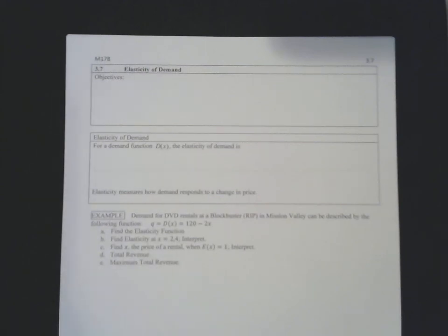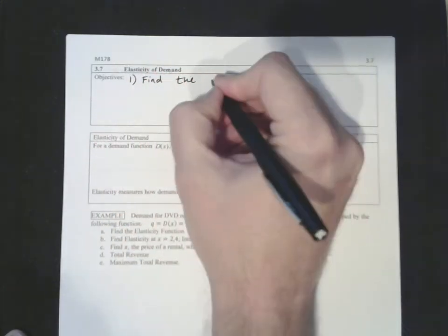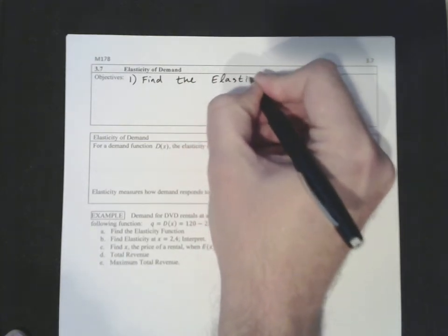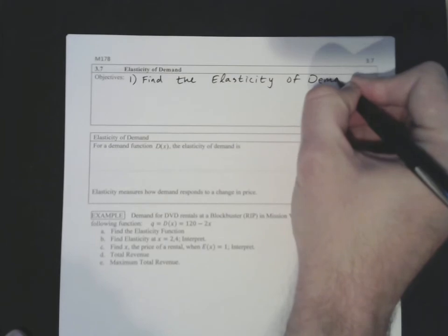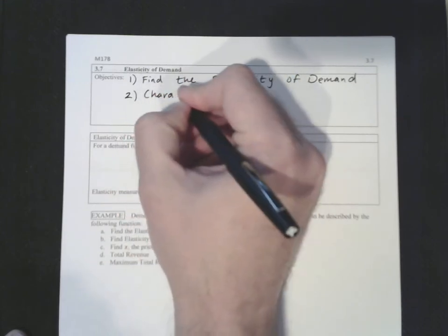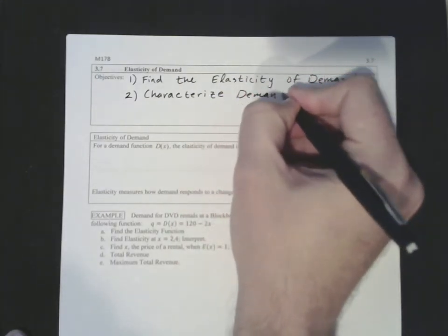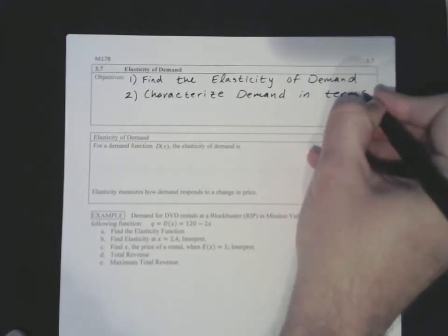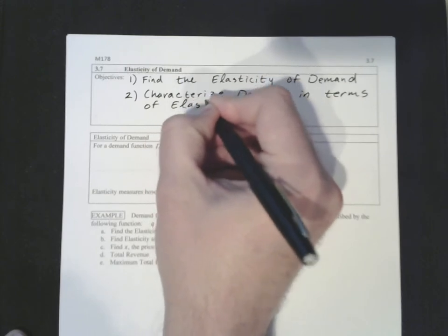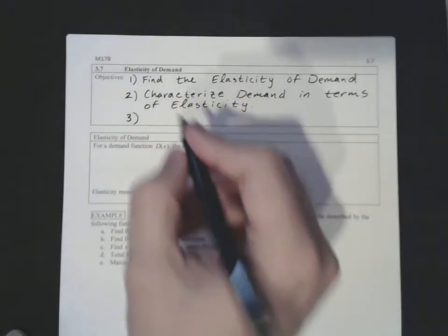Section 3.7 is on elasticity of demand. We have three things to look at: first, we need to be able to find the elasticity of demand; second, we want to characterize demand in terms of elasticity; and finally, we want to characterize revenue in terms of elasticity.